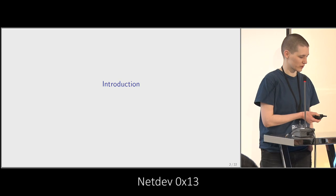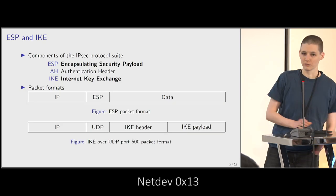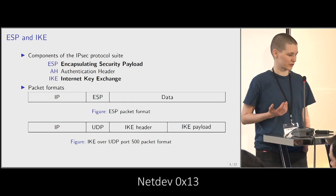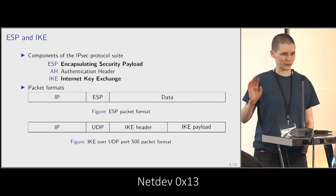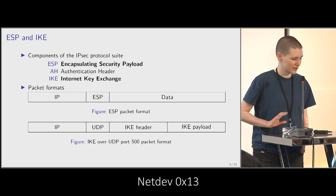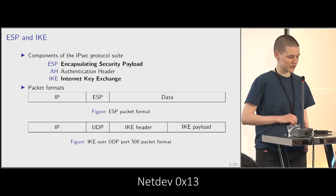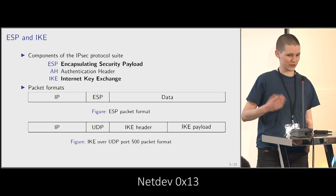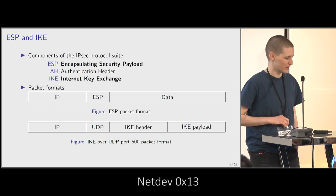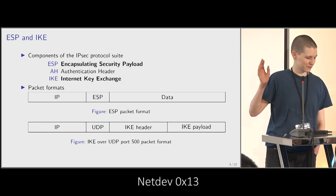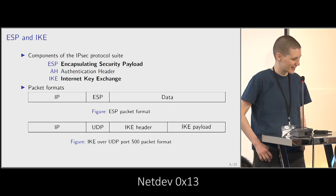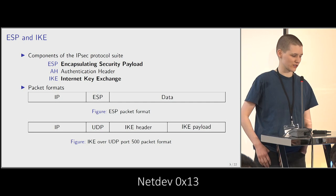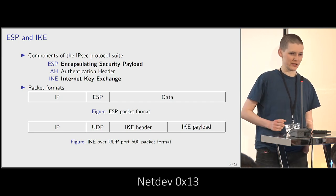IPsec is a protocol suite that has three components, one of which I'm not going to talk about after this introduction. There's ESP — the Encapsulating Security Payload — that's what carries the data you want to protect. There's Authentication Header, which we're not going to talk about. And IKE is the key exchange mechanism that sets up the ESP association.